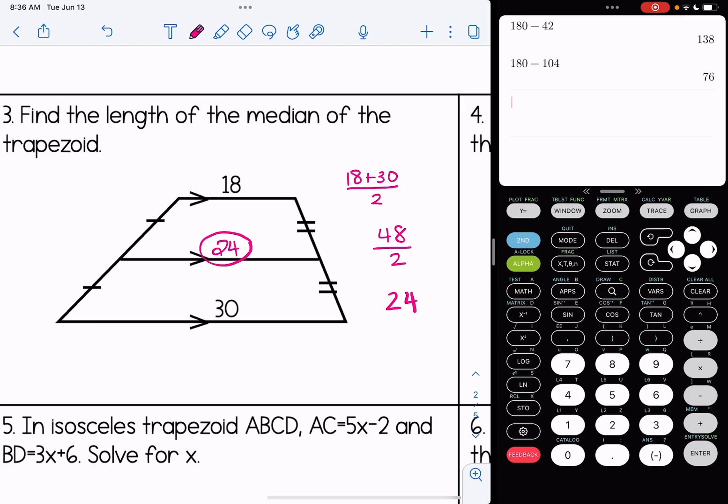Another way that you could think about this is when you've learned about mean, median, and mode. Median is the number in the middle. If you think about 18 and you think about 30, what number is located in the middle of them? And that would give you 24.